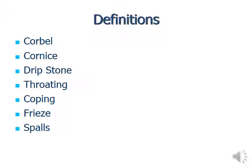Now comes stone masonry. For stone masonry, stones are used as the masonry units for construction purposes. The definitions to be discussed include: cobble, cornice, dripstone, toothing, coping, frieze, and spalls.